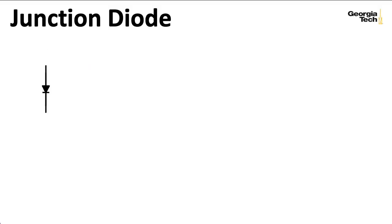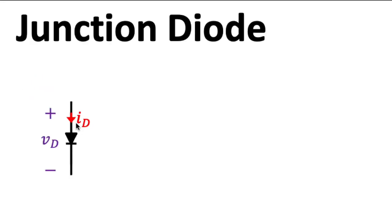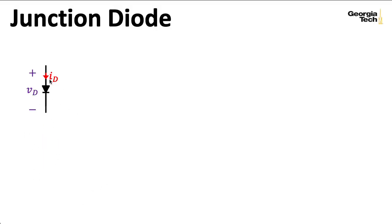Here we have our usual symbol for a junction diode. The top part of the triangle here is called the anode. The straight line here is called the cathode. And we usually think about a current ID flowing in the direction of the arrow, with a voltage measured across the diode according to this usual passive convention, with the conventional current flowing from the positive to the negative in terms of how we're measuring the voltage. Now, when I say conventional current, remember that's our electrical engineering convention. The electrons are actually flowing the opposite direction, and that might be more how a physicist thinks about it.